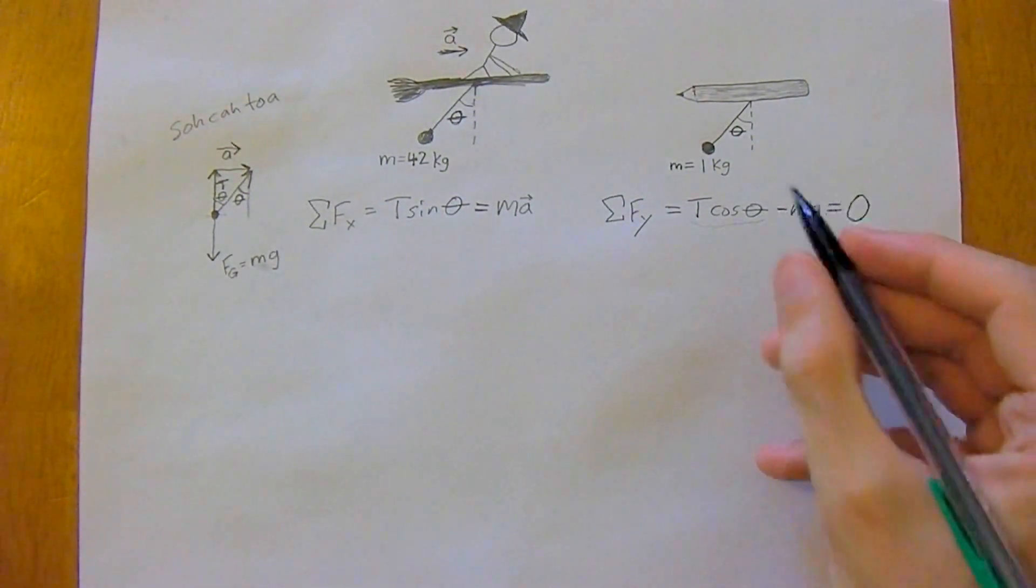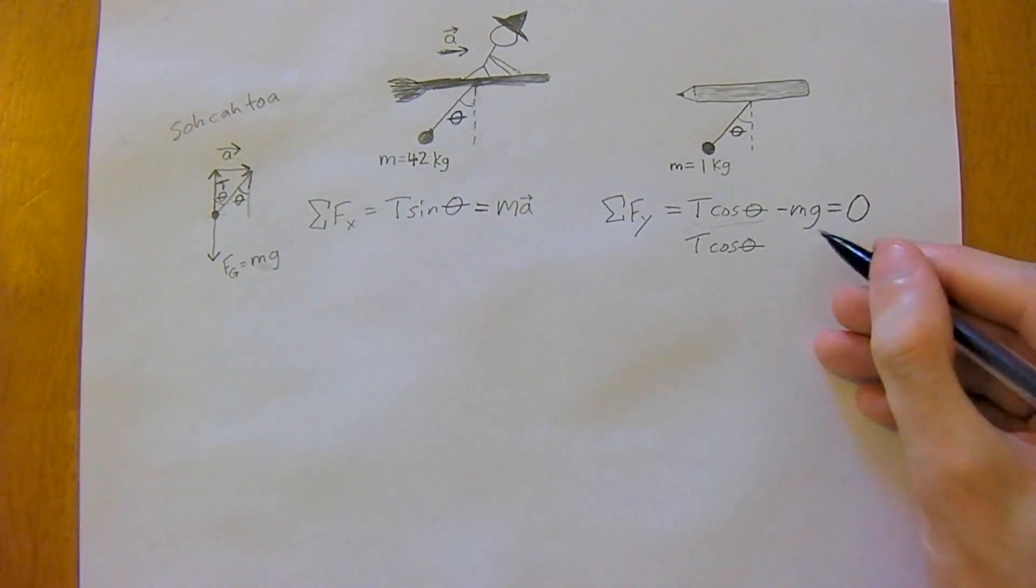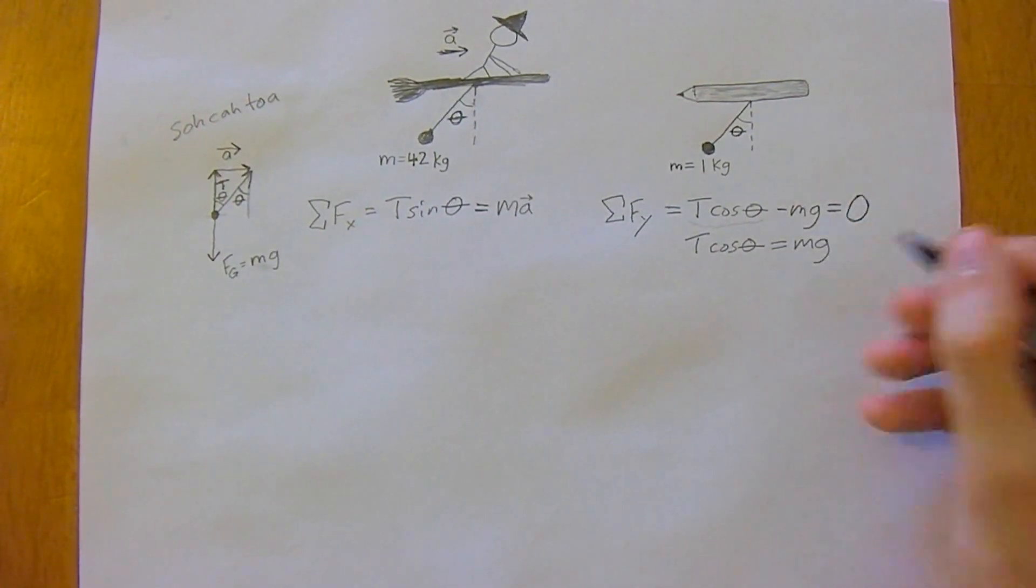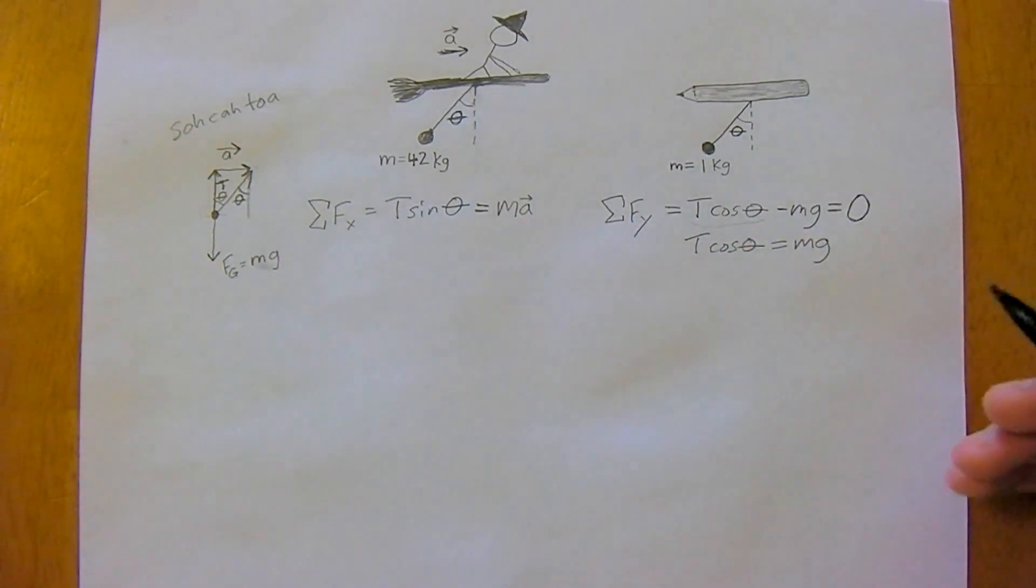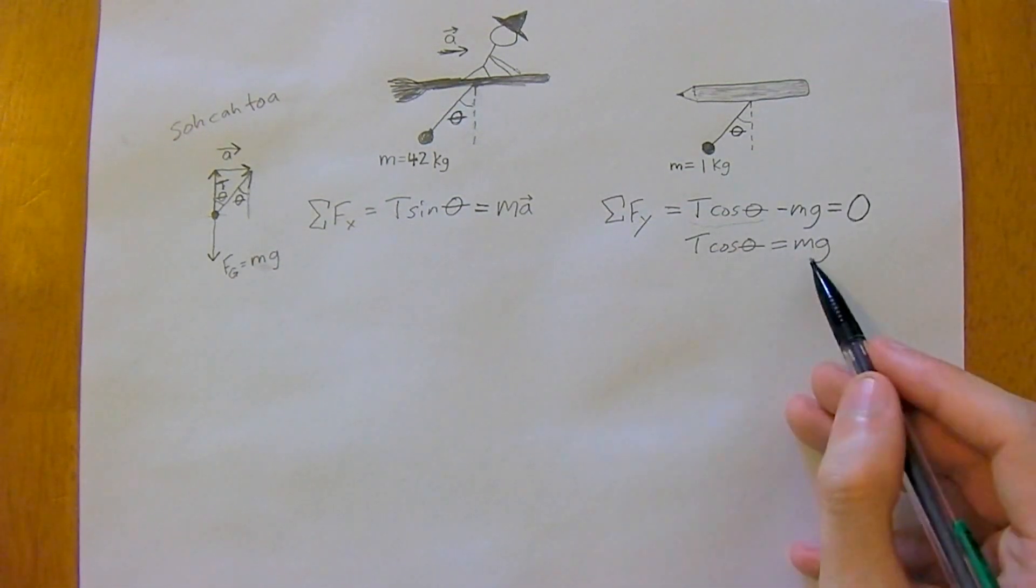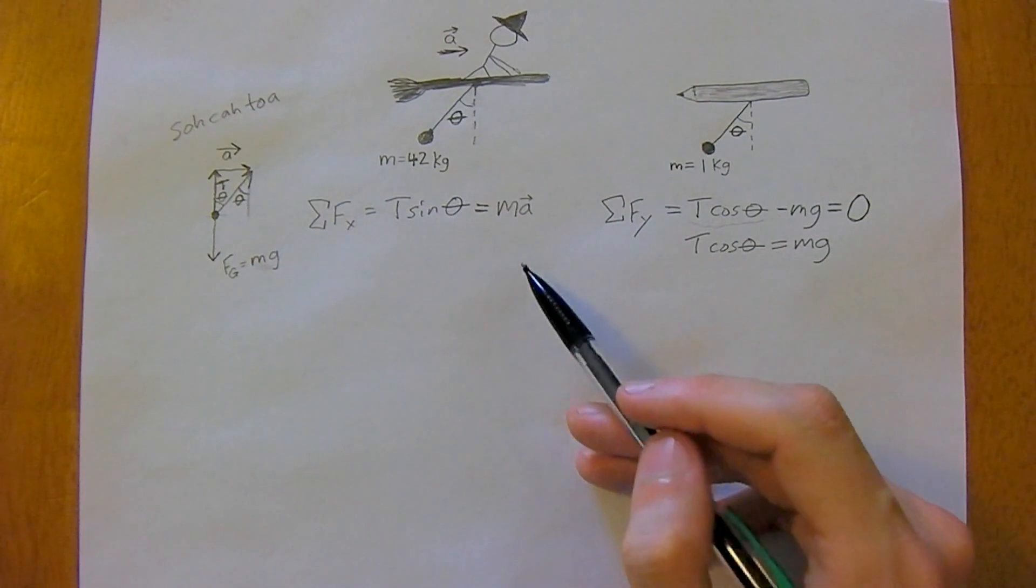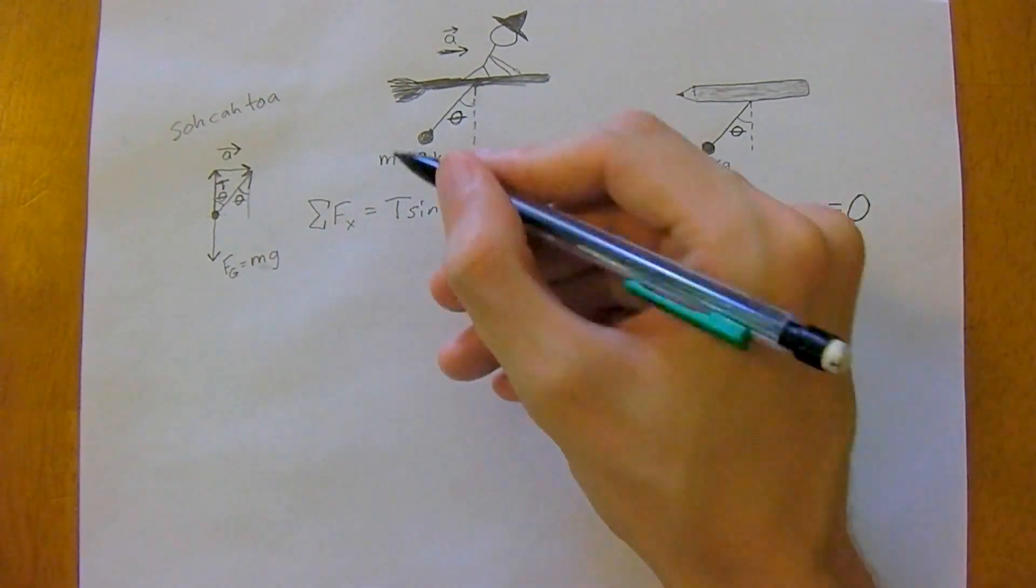Now we can—because we have zero on the right side—we can add mg to both sides, making it positive. Then we can set our tensions equal together because we have two equations with two unknowns, so we can solve for both of those unknowns.